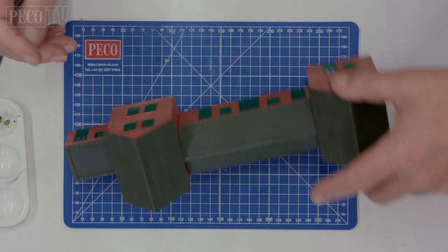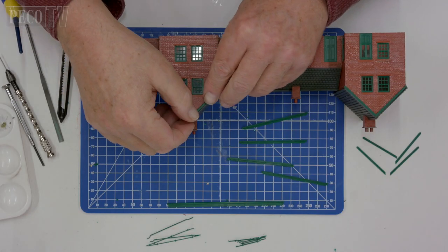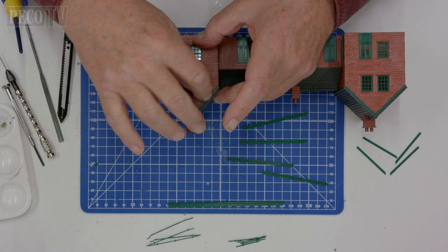Once dry attach the canopy to the main station building and add all the fascia boards and chimneys, gutters and downpipes.